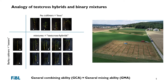On this slide, I'm trying to demonstrate the analogy of test-cross hybrids — a concept from hybrid breeding — and binary mixtures. On the top we have the pea cultivars: a large number of pea cultivars to be tested, which would be the lines. Then we have a smaller number of barley cultivars — in this example two — which from hybrid breeding would be the testers. The individual mixtures in the center are similar to the test-cross hybrids.